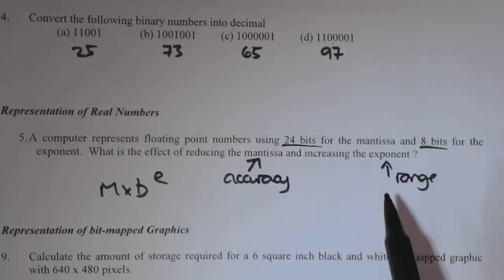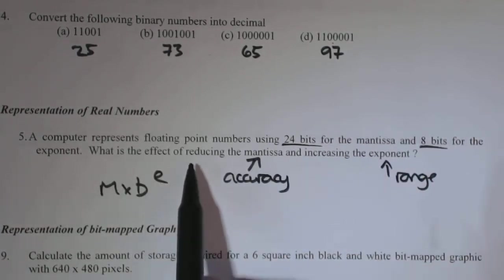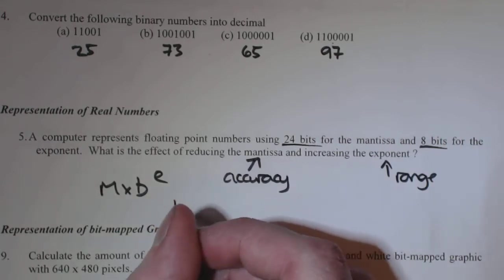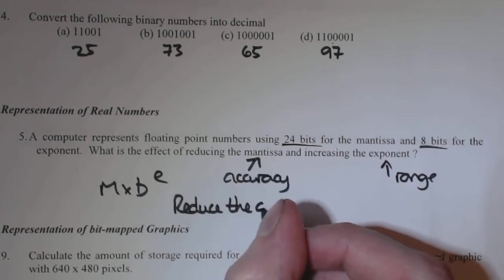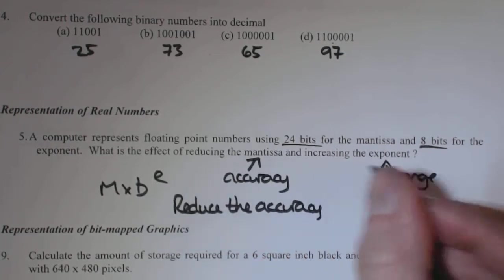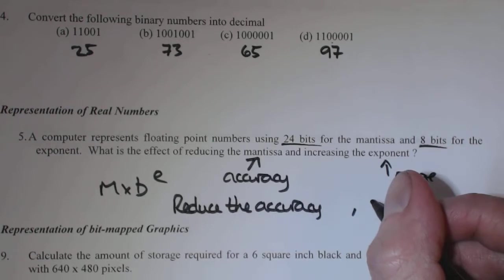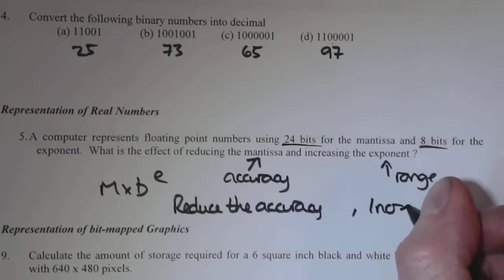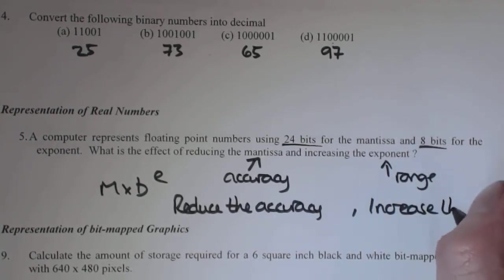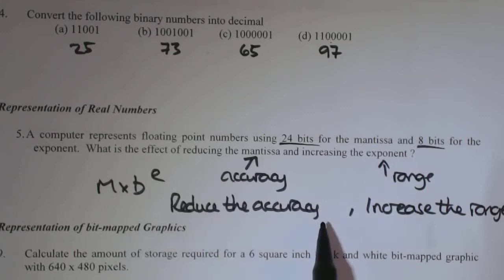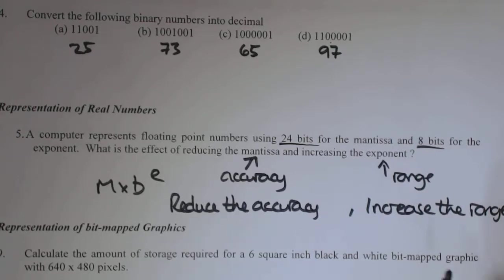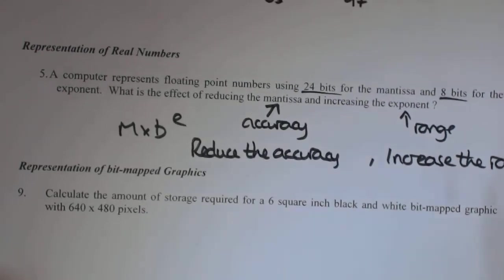And exponent is for your range. So the bigger mantissa, the bigger the accuracy, or the greater the accuracy, or the precision as you might hear. And the bigger the exponent, the greater the range. So if you reduce the mantissa, we reduce the accuracy. Or if we increase the exponent, we increase the range. So we reduce the mantissa, you're just reducing the accuracy, or you're increasing the range if you increase the exponent.